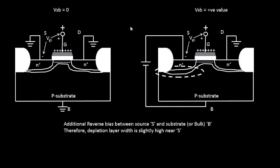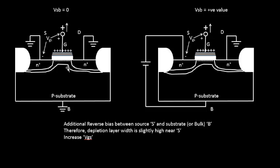Now what we have to do is increase the gate-to-source voltage in both cases simultaneously and see what happens — specifically find that particular potential at which the surface inversion happens, because that potential will be called the threshold voltage. As we increase the gate-to-source voltage, the first layer of inversion charges gets pushed just below the gate in both cases, and we see the formation of the inversion layer and the surface inversion phenomenon.